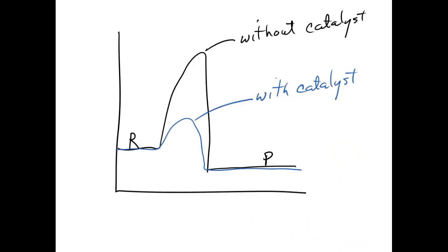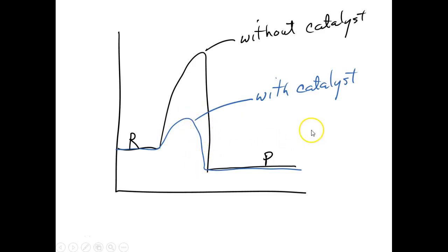We've seen this energy diagram several times. The activation energy without a catalyst is much higher than with a catalyst, which is why the reaction is faster with the catalyst. The reason the activation energy is lower is that we have a completely different mechanism with a catalyst — a completely different set of steps with a completely different slow step. We might not even have the same reaction order, and the k value is certainly going to be different.